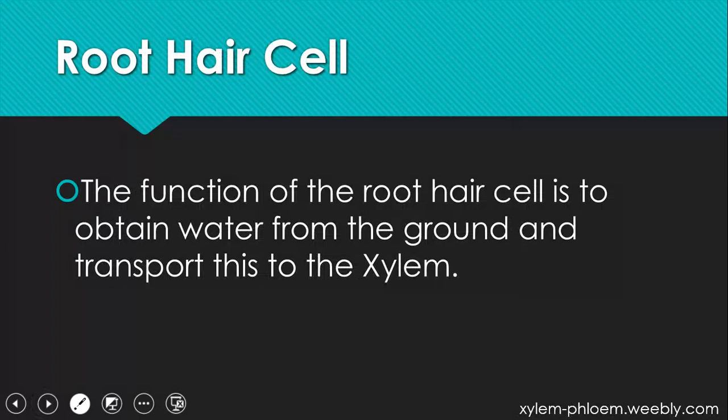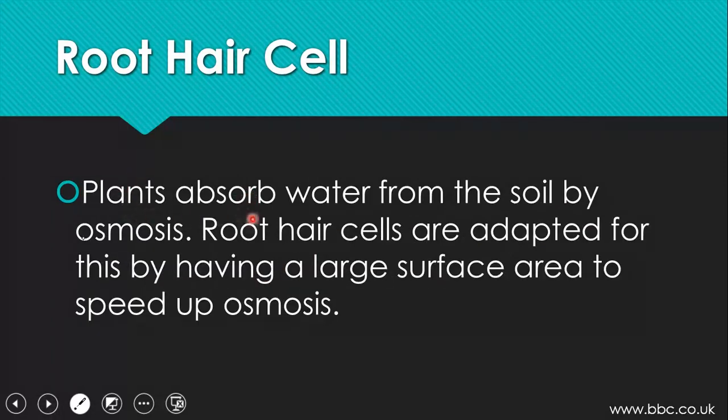Then what is a root hair cell? The function of the root hair cell is to obtain water from the ground and transport this to the xylem. Plants absorb water from the soil by osmosis. Root hair cells are adapted for this by having a large surface area to speed up osmosis.